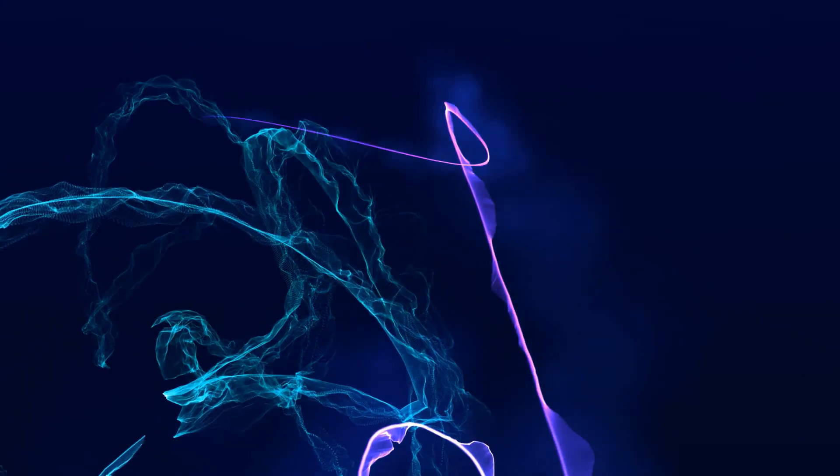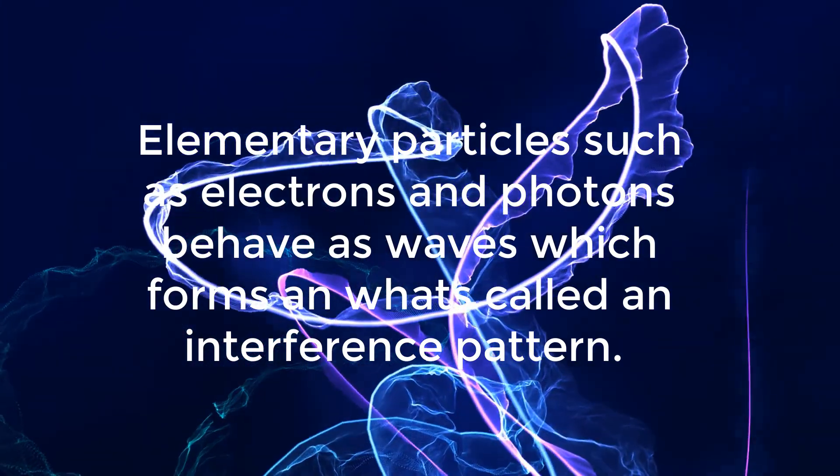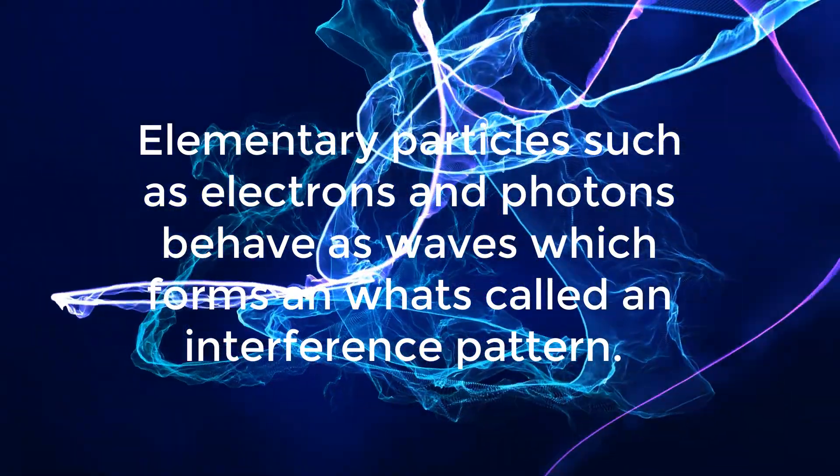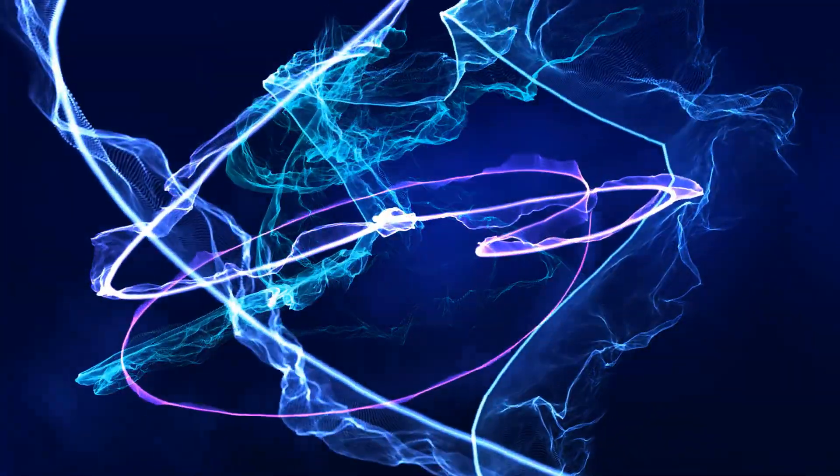Much later, in the year 1924, physicists demonstrated that just as waves of light are somehow particles, elementary particles such as electrons and photons behave as waves, which forms what's called an interference pattern. However, this created a paradox. So, to resolve this paradox, Erwin Schrödinger proposed a strange idea in 1926 with the discovery of the Schrödinger equation.